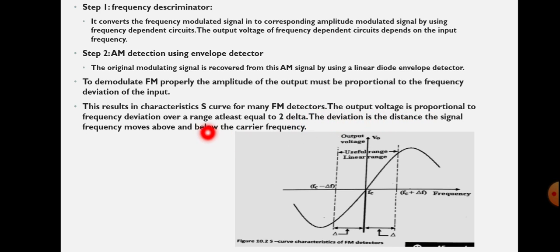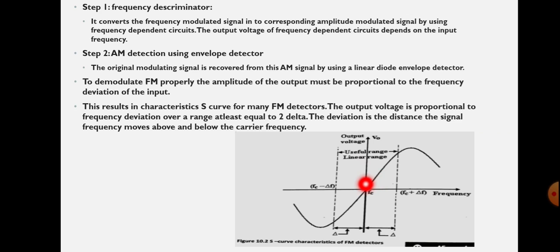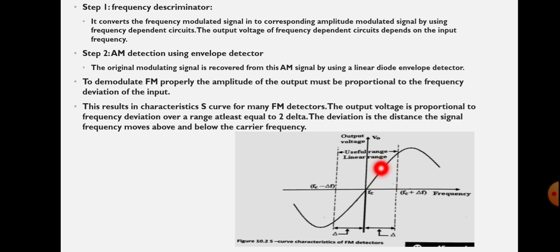The output voltage is proportional to the frequency deviation over a range at least equal to 2Δ. You can see the diagram here — this is the characteristic curve relating frequency deviation with output voltage. The deviation is the distance the signal frequency moves above or below the carrier frequency. Here, fc plus Δf means the frequency is deviated from the carrier frequency fc by an amount Δf. In order to demodulate the original FM signal, the output voltage must be proportional to the frequency deviation over a range at least equal to 2Δ.